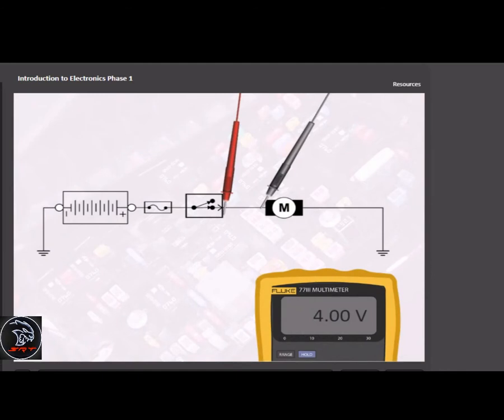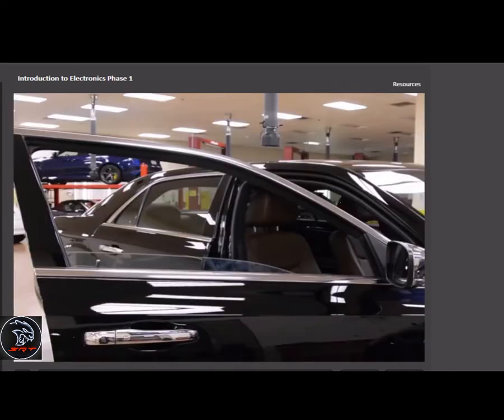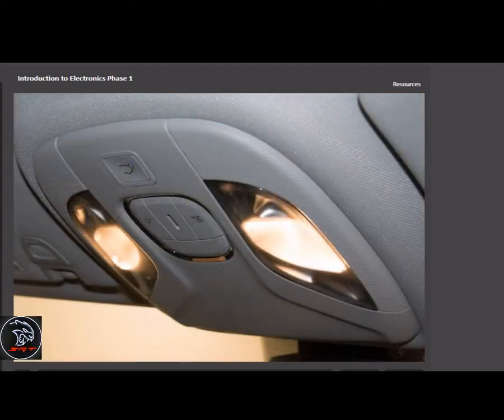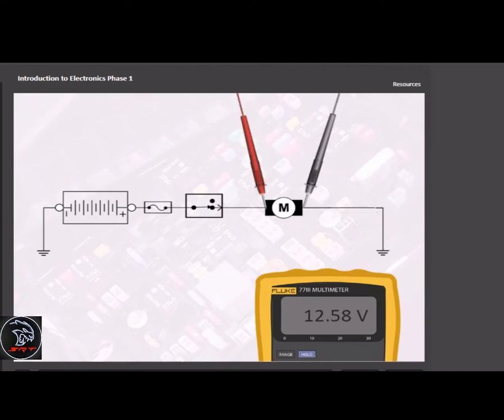Unwanted voltage drop is caused by unwanted resistance somewhere in the circuit. Remember, by design, most of the voltage is supposed to drop across the load device.